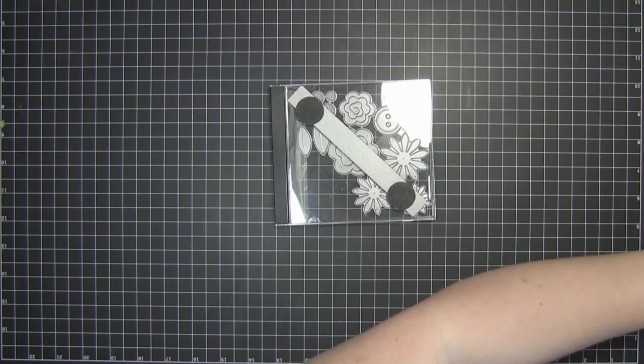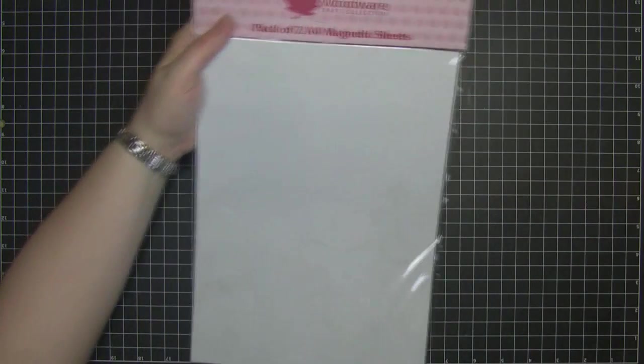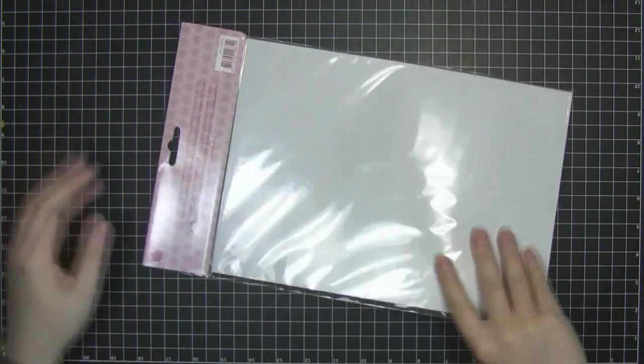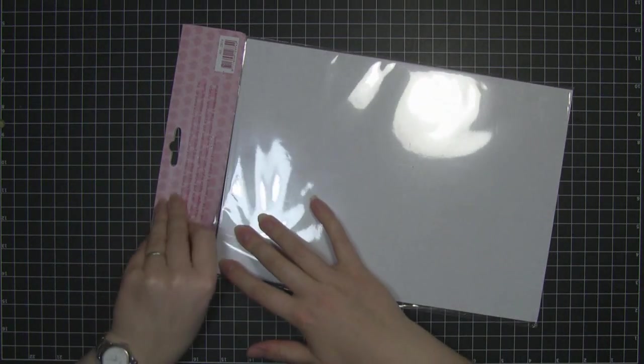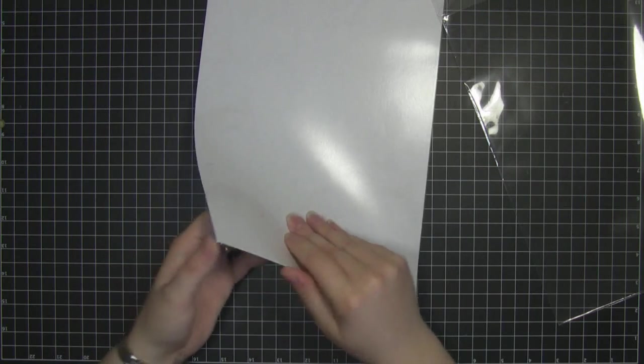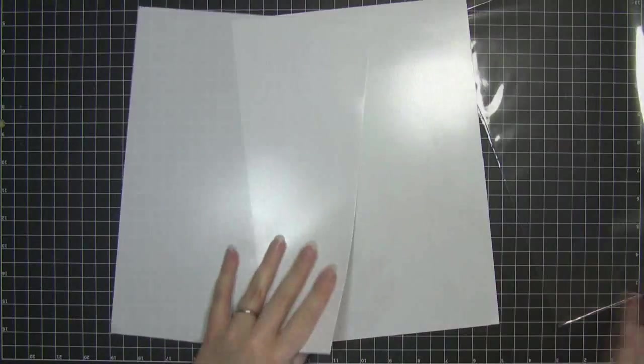Now you can buy these magnetic sheets from, well, this one's by Woodware. They're quite thin, but they've got quite strong magnets in them, so it's really good. This one comes with two A4 sheets of magnet, so you've got plenty to be getting along with.